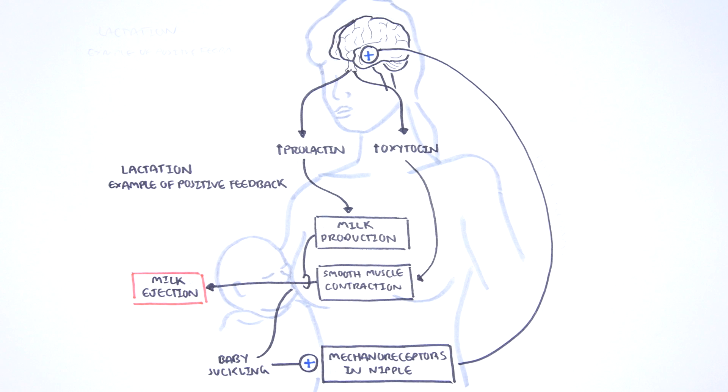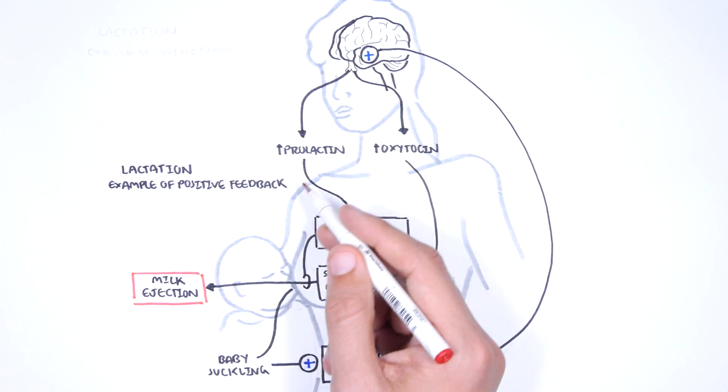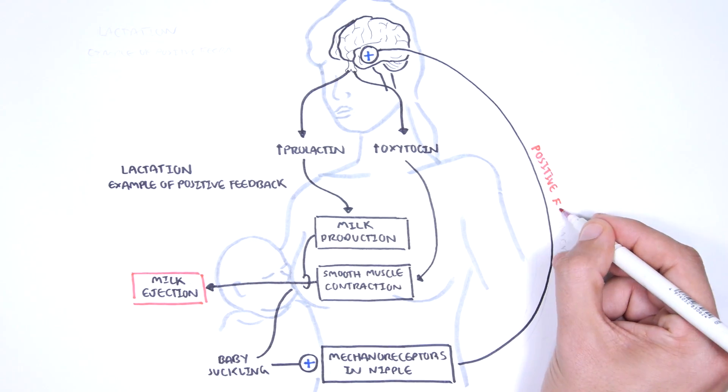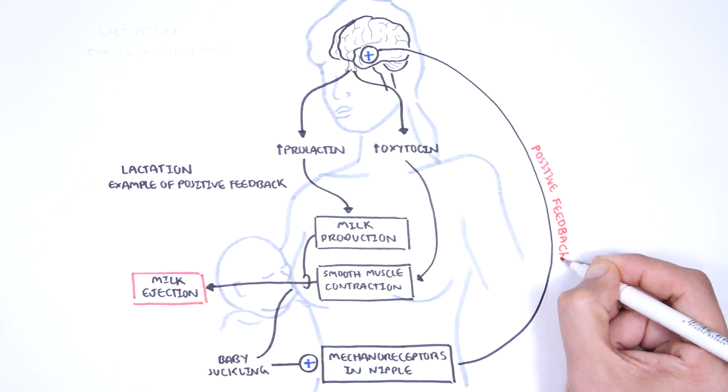The milk ejected is taken by the baby, and the whole process continues. The baby suckling will activate mechanoreceptors, which will stimulate the brain. This is a positive feedback loop, because nothing is being suppressed here. It is amplifying a response. And as you can see, positive feedback is amplifying a response in the same direction, whereas negative feedback negates the response to maintain internal stability.